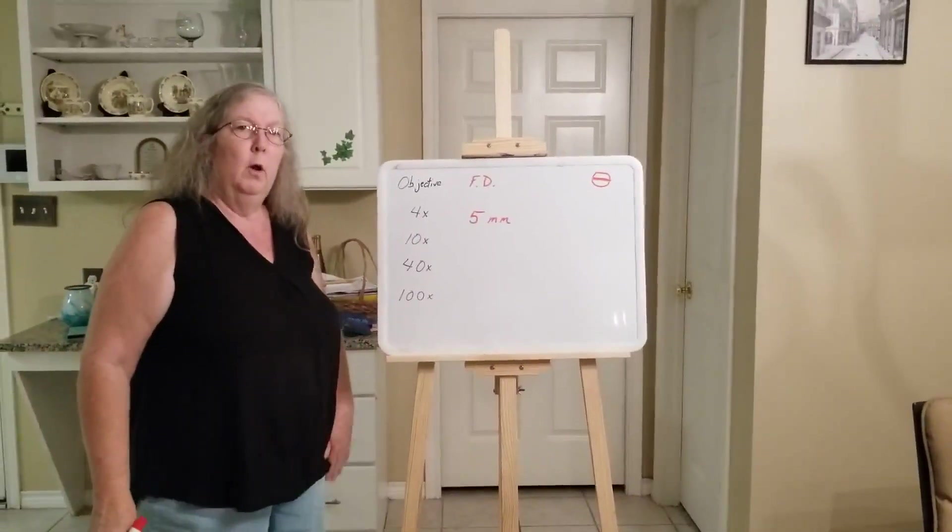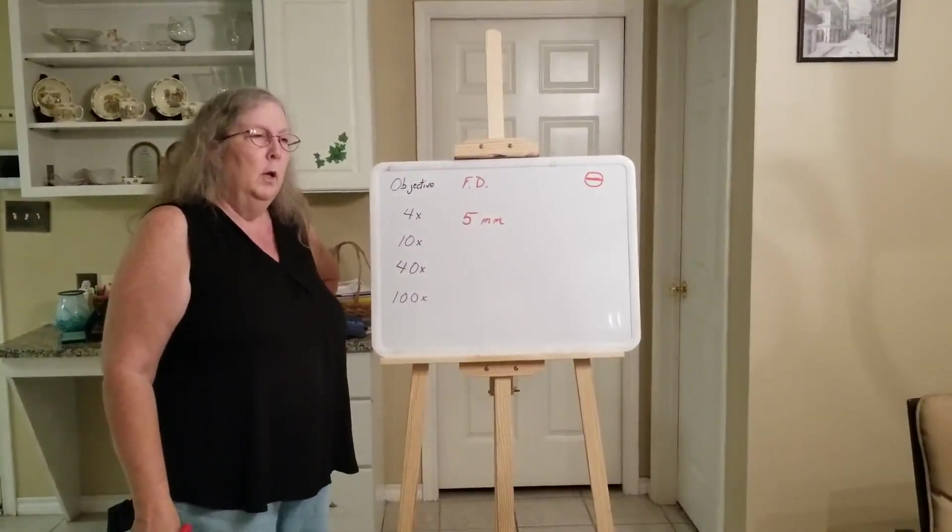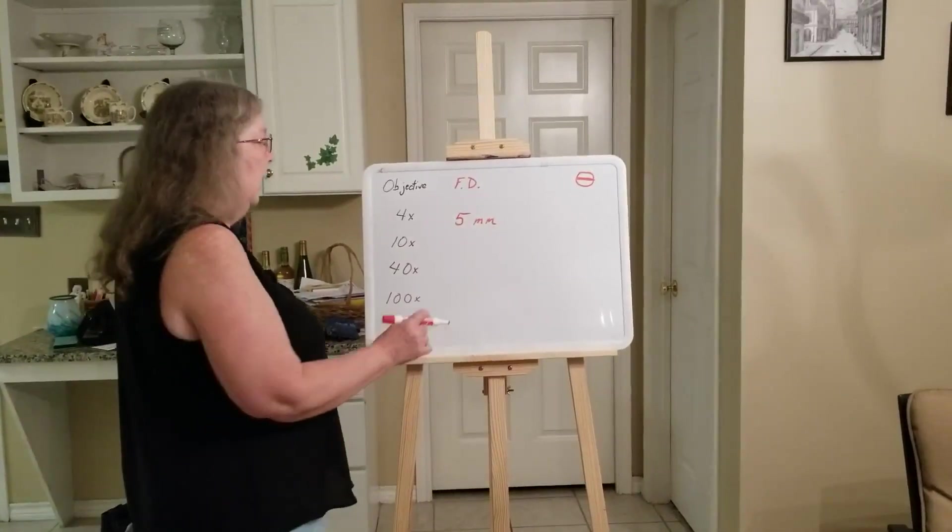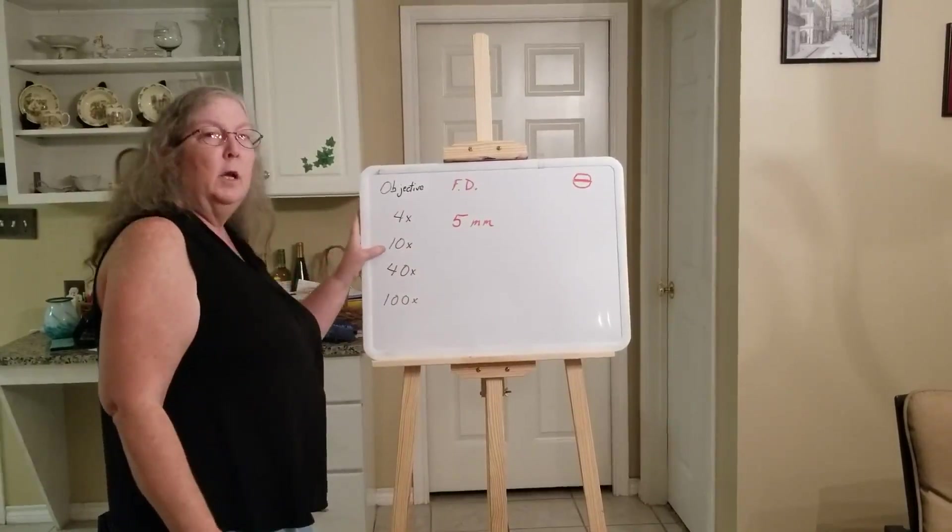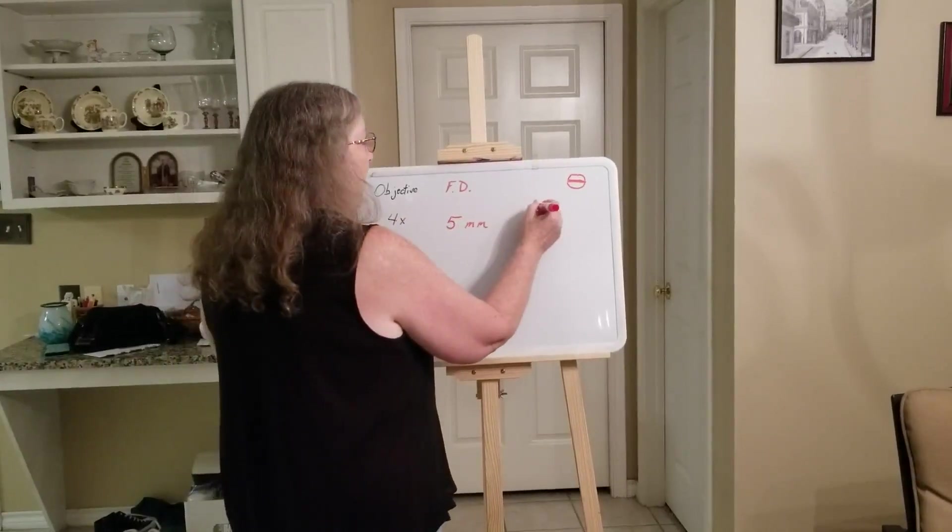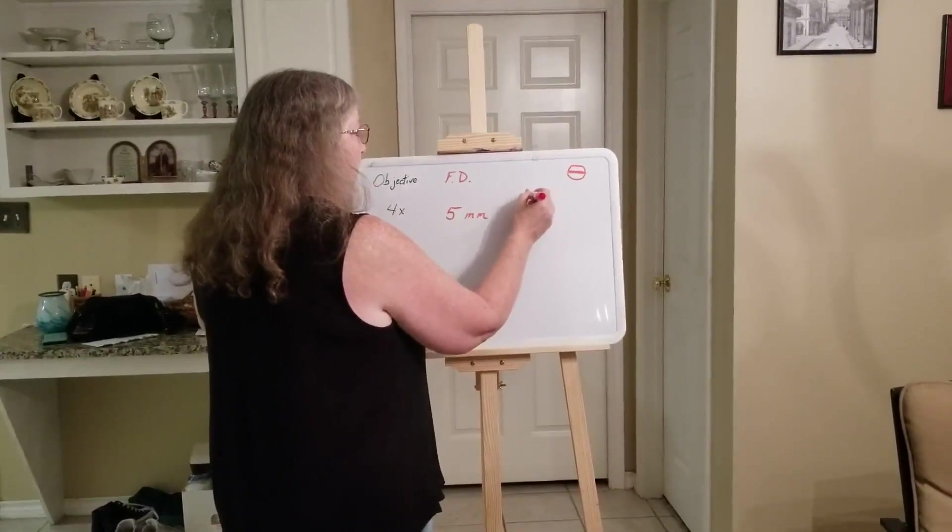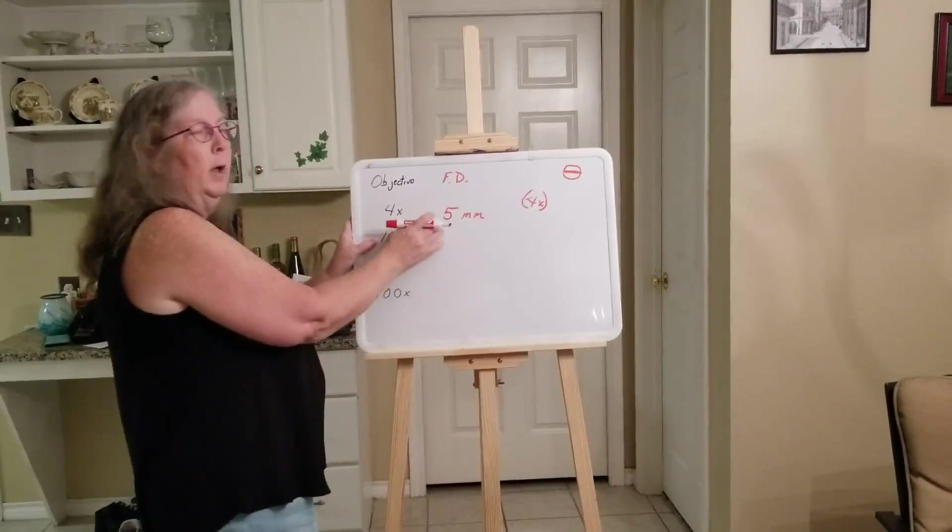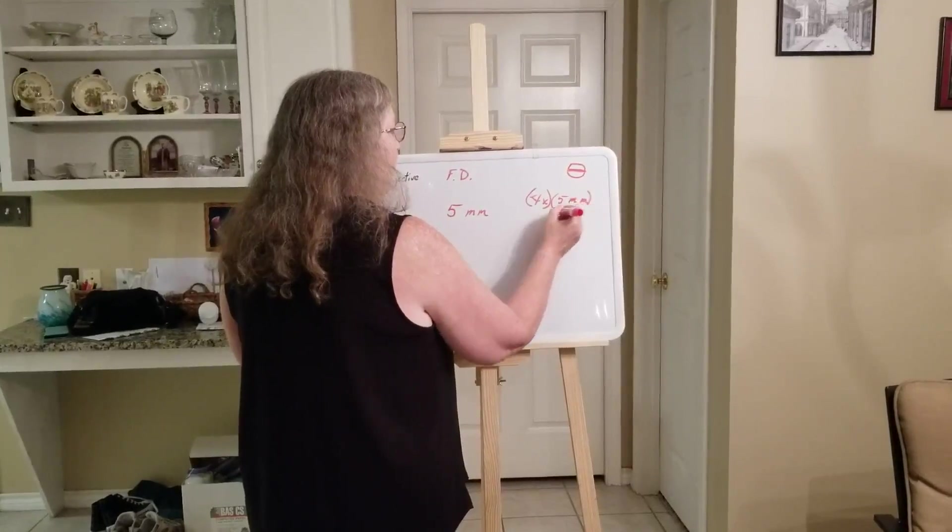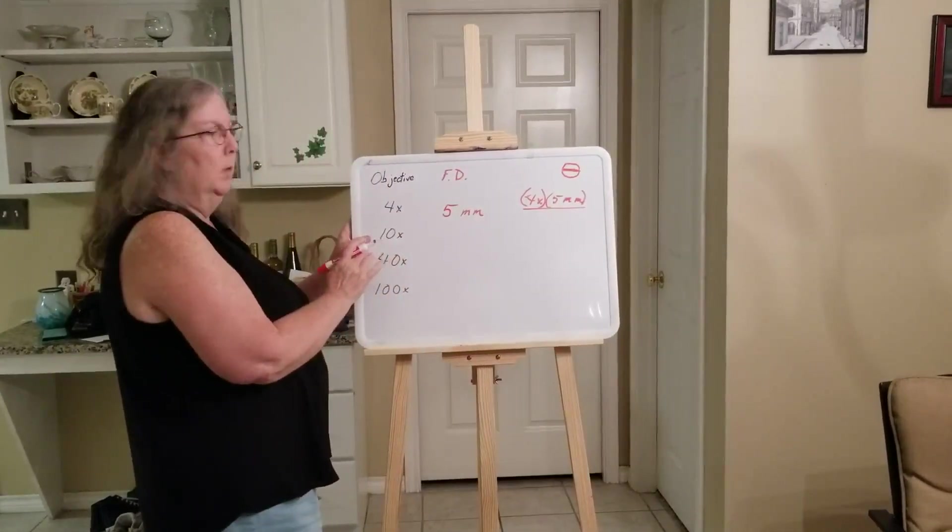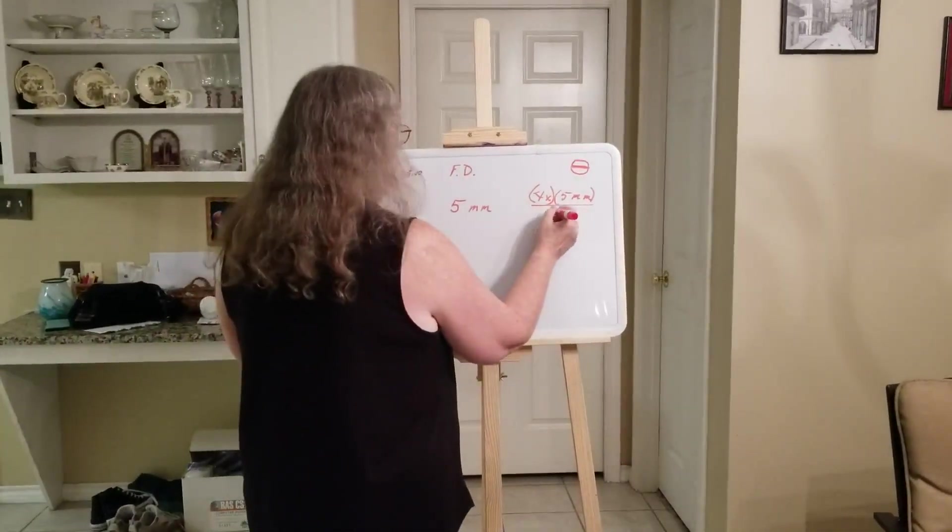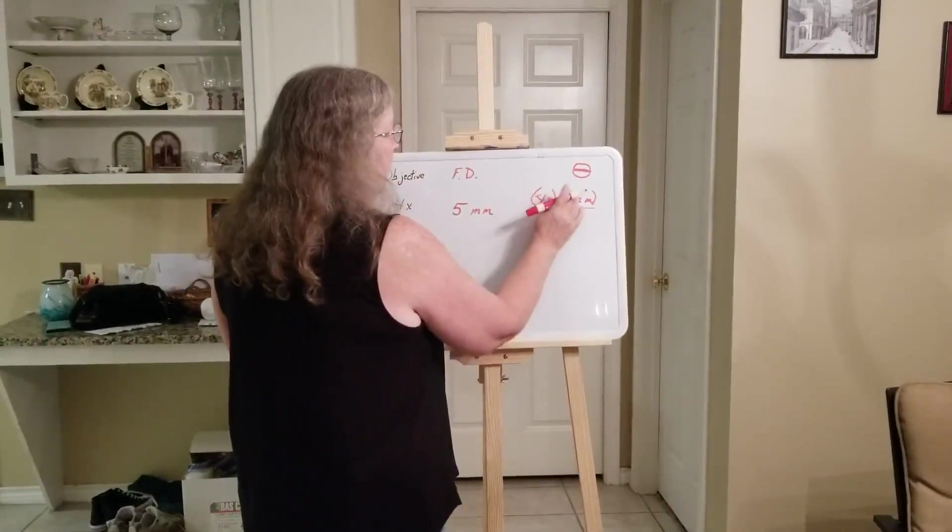Do you have to measure at all four oculars? No, you don't. There is a formula that you can use to calculate the other measurements. How do you do that? Well, if I want to know what the field diameter is for the 10x, I multiply what I know. I have the 4x. I multiply that by the 5 millimeters, which I measured. That's how I got that number. And then I'm going to divide by the objective lens for the one that I'm trying to calculate it for. In this case, the 10x.